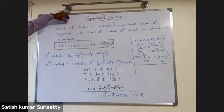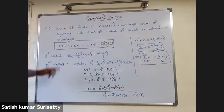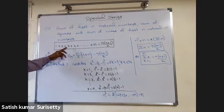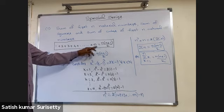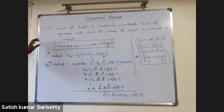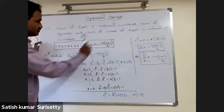Let us consider the first one: sum of first n natural numbers, that is 1 plus 2 plus 3 and so on up to n. This we have already proved as n into n plus 1 by 2.